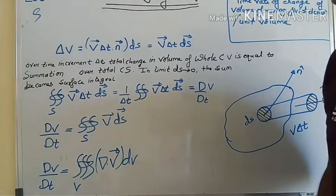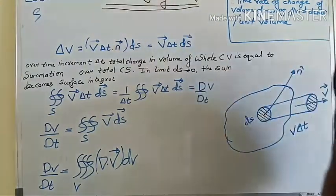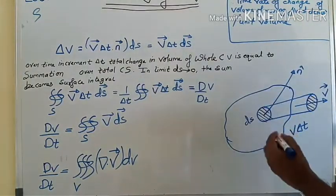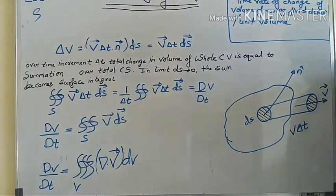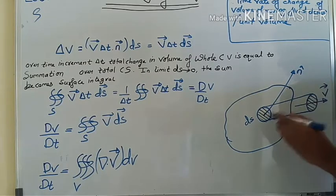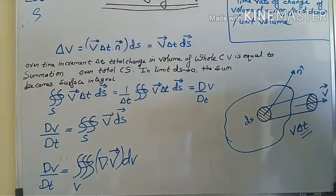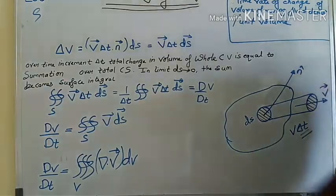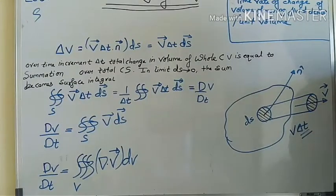Now we are moving towards deriving the value of Del dot V. Let us take an example: this is a control volume, and this is the elemental surface ds, moving with the velocity vector V. Here n is the normal to the elemental surface. After a time increment delta t, there is a change in the volume, and that change in volume is V dot ds delta t — this is the amount of change in the volume when the elemental surface is moving with the velocity vector V.